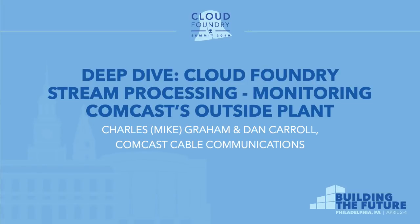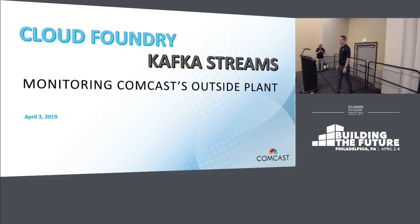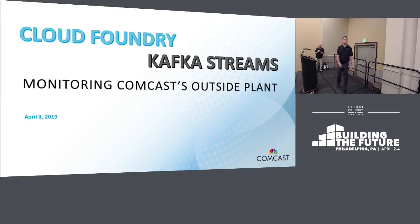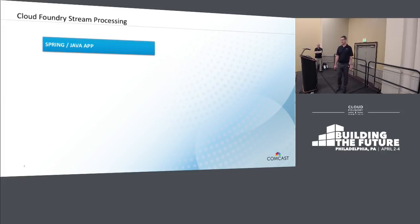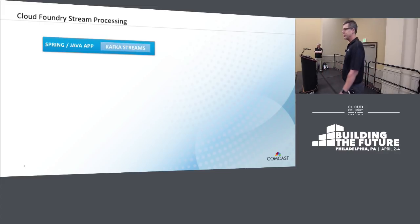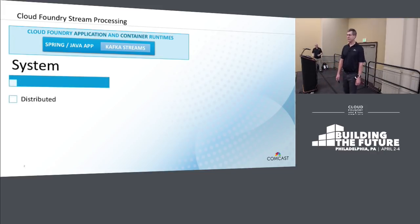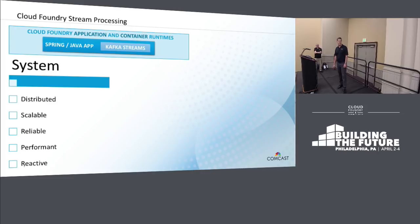Good afternoon. My name is Mike Graham, and this is Dan Carroll. We work for Comcast in the Denver offices. Dan and I have been working to modernize the monitoring system for Comcast's outside plant, leveraging Cloud Foundry and Kafka Streams, and we're excited to share those experiences with you today. We'll provide you with a roadmap showing you how to create a Spring Java app, how to add the Kafka Streams libraries to it, and how to deploy the application to Cloud Foundry application and container runtimes, with the goal of building a system that is distributed, scalable, reliable, performant, and reactive to events in real time.